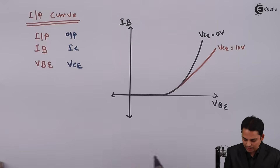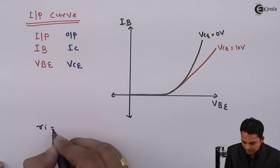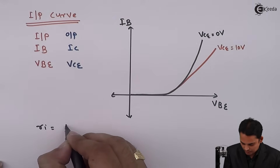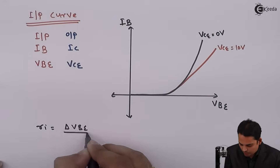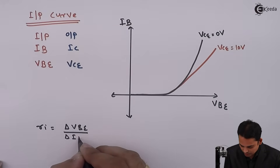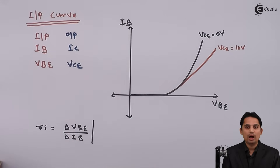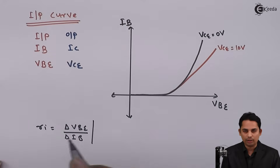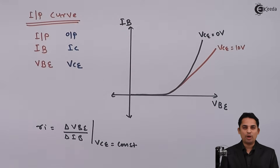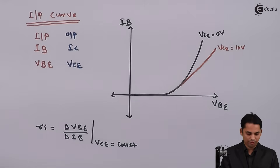The input impedance RI is defined as the change in input voltage VBE divided by the change in input current IB, keeping the output voltage constant. For the common emitter amplifier, the input impedance is in the range of 1 to 5 kilo ohms, which is considered a high input impedance.